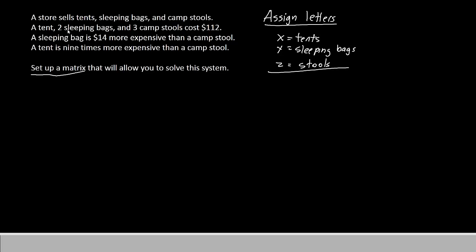It says one tent and two sleeping bags and three camp stools together cost $112. Well, the tents are x, so we'll start by saying x, two sleeping bags, so two of y, so we'll say plus 2y, and three of camp stools, that's 3z. Now, all together, they add up to 112, so we'll say equals 112. That's the first line.